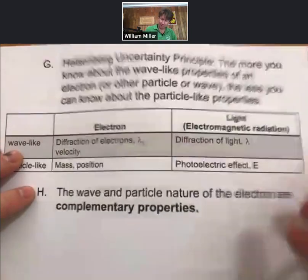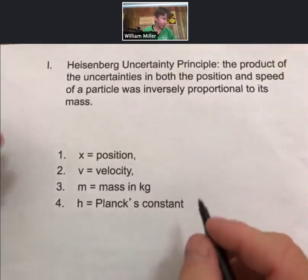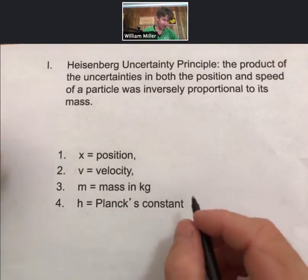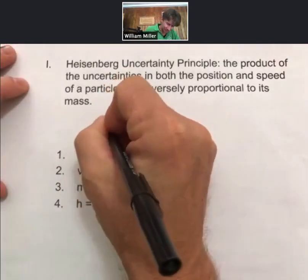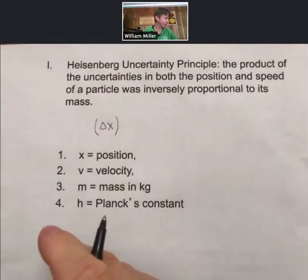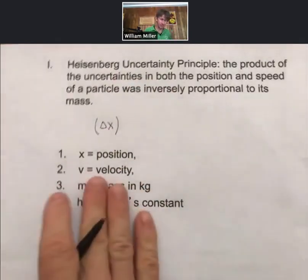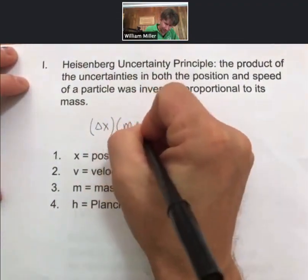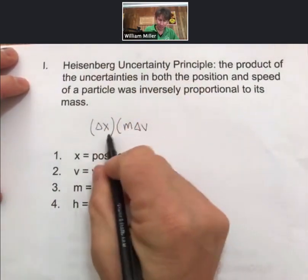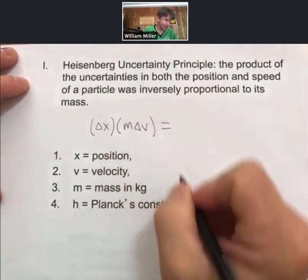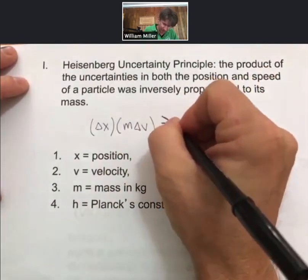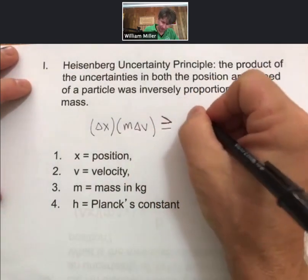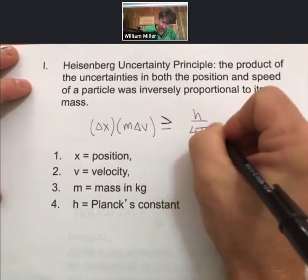We do have a little bit more, because the Heisenberg uncertainty principle, there is an equation associated with it, and that equation looks like this. So delta x, and I'll put this in parentheses so that we can keep it apart from the rest of the equation, so the equation doesn't eat itself. So m times delta v, and I'll define these terms in a minute, is equal to or greater than h over 4 pi.